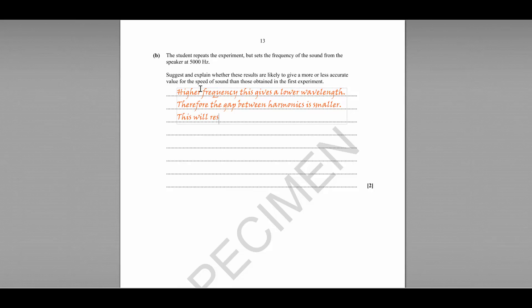This will result in a higher percentage uncertainty in the measurement of the length. Because we've got a smaller length, our ruler hasn't become any more precise. Therefore, the experiment is less accurate.